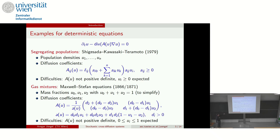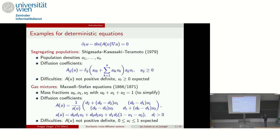Here I have the diffusion coefficients a_ij, where the delta is the Kronecker delta. The u_i's describe population densities. The populations don't like each other, so they have the tendency to segregate. The model was developed by Shigesada, Kawasaki, and Terramoto in the 1970s to describe this phenomenon. There are mathematical difficulties that make the problem interesting. For systems of parabolic equations there is no maximum principle, but since we deal with densities, we would like to get non-negativity at least almost surely. The matrix with non-negative constants a_ij is neither symmetric nor positive definite in general — this is one of the main difficulties.